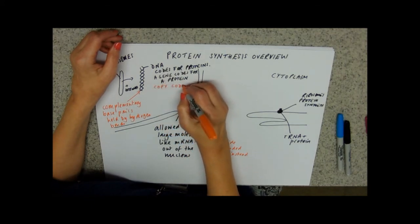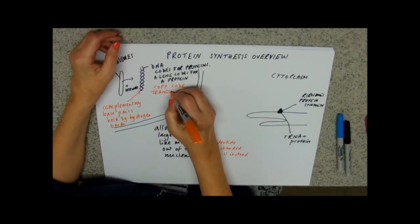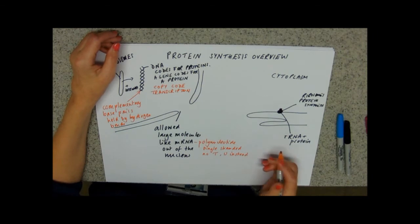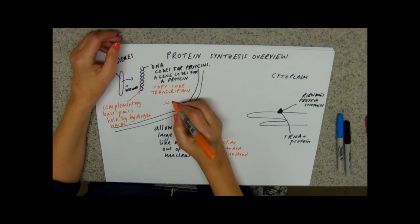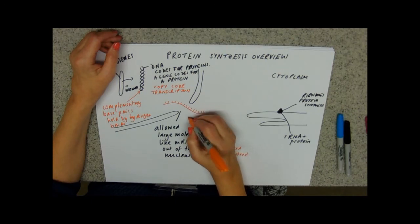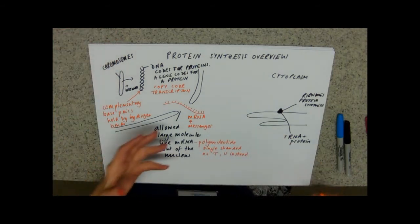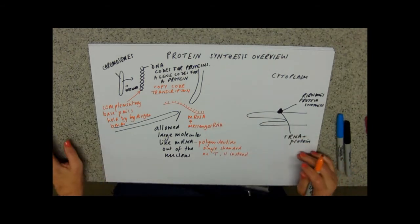So the first stage is the copying stage. The first stage of protein synthesis is to copy the code, and we call that transcription. And if you think about it, we could just make a complementary molecule of our single-stranded RNA, and we're going to call that mRNA. Now the M stands for messenger, so it does what it says on the tin - it carries the message out from the DNA and into the cytoplasm.